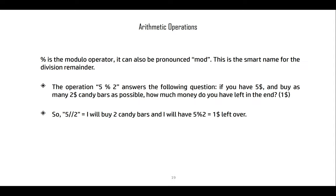This remainder is calculated with the modulo operator, also pronounced mod—it's the smart name for division remainder. The operation 5 % 2 answers: if you have $5 and buy as many $2 candy bars as possible, how much money do you have left? So 5 // 2 = 2 candy bars, and 5 % 2 = $1 left over.